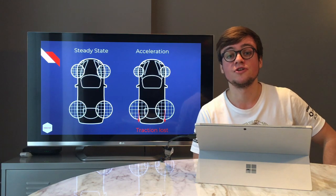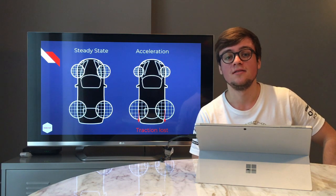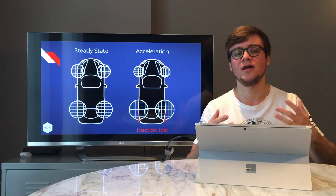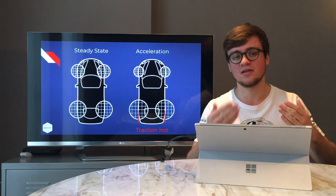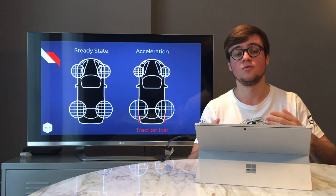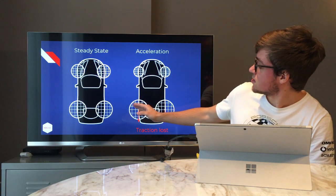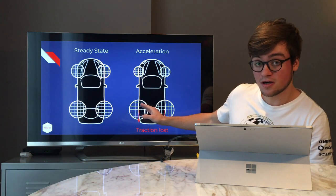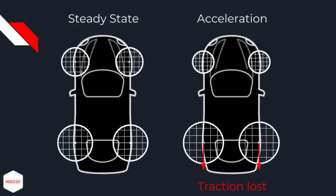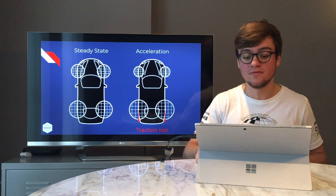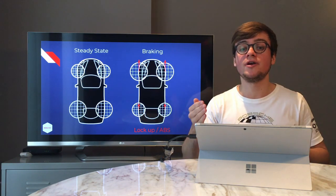Now let's think about what happens if we push the car too much. What if we absolutely floor it from a standstill in a car without traction control? The friction circle diagram shows the extra grip at the rear because the car leans back, but this time the red arrows go beyond the circle — we're putting too much force through the tires and the friction between the tires and the road doesn't hold. Traction is lost.